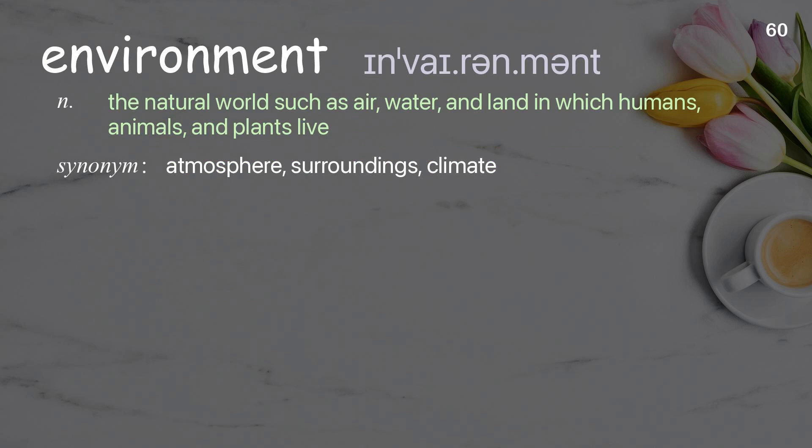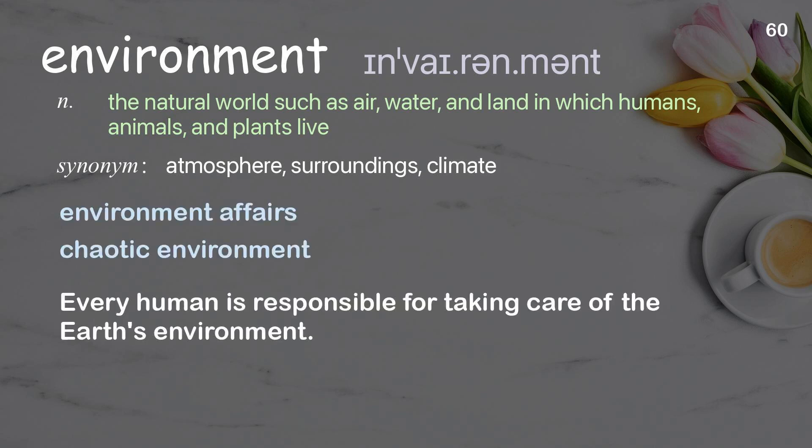Environment. The natural world such as air, water, and land in which humans, animals, and plants live. Examples: Chaotic environment. Every human is responsible for taking care of the Earth's environment.